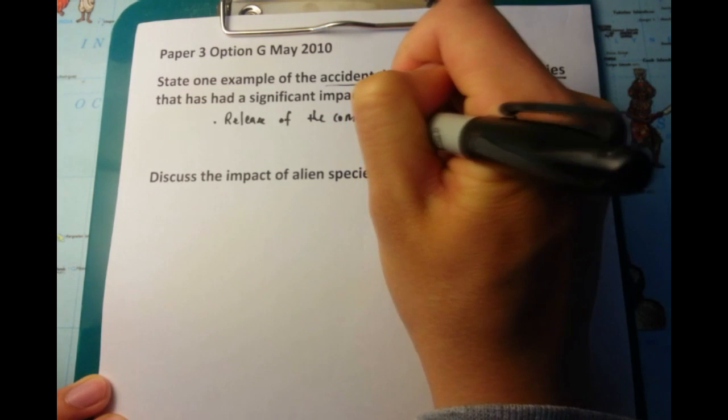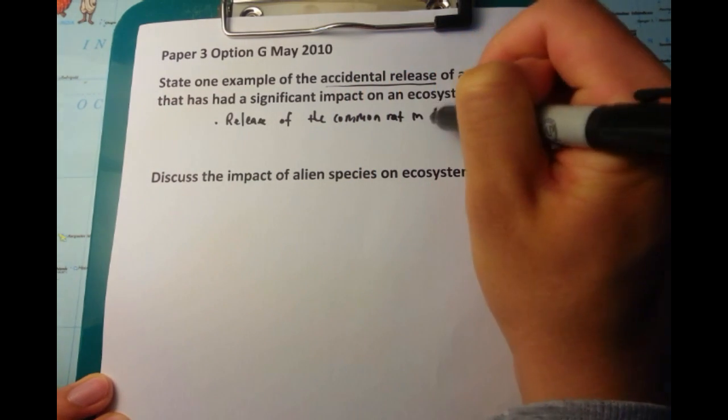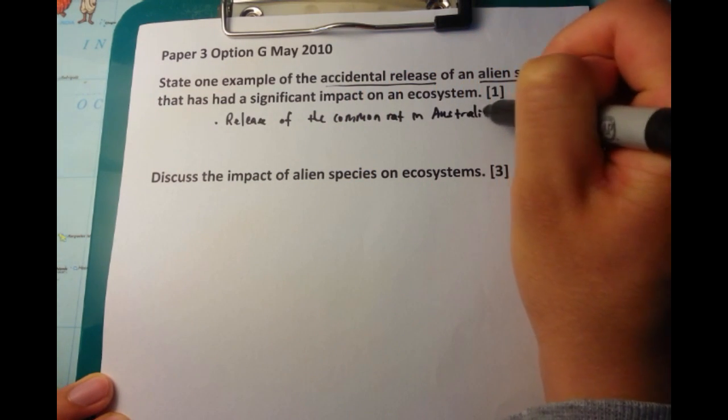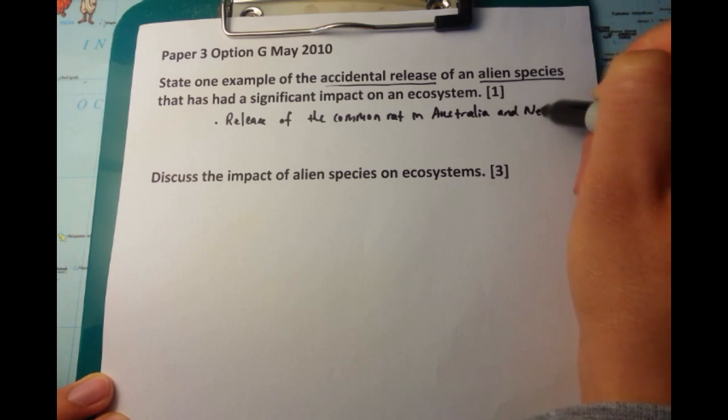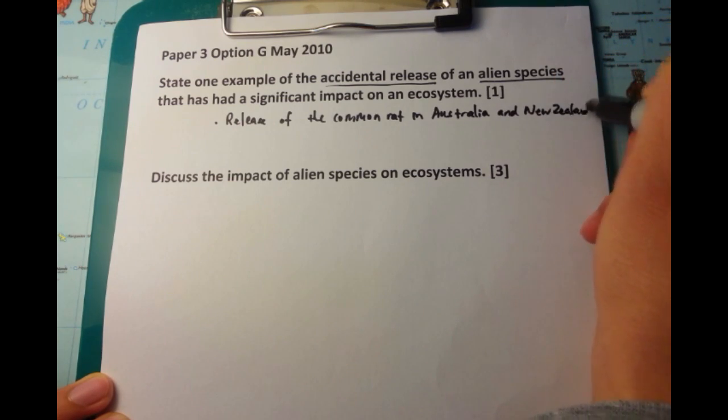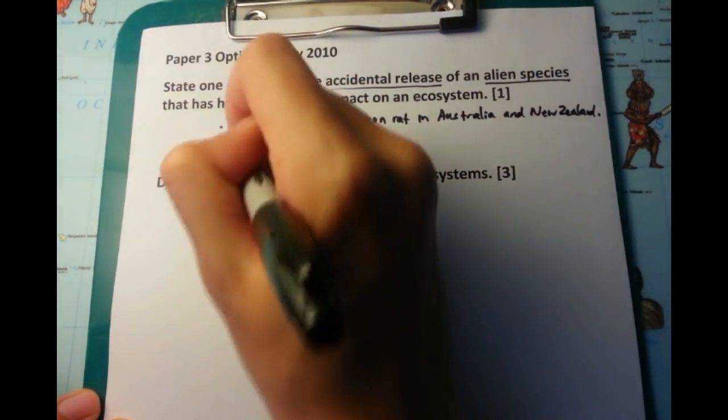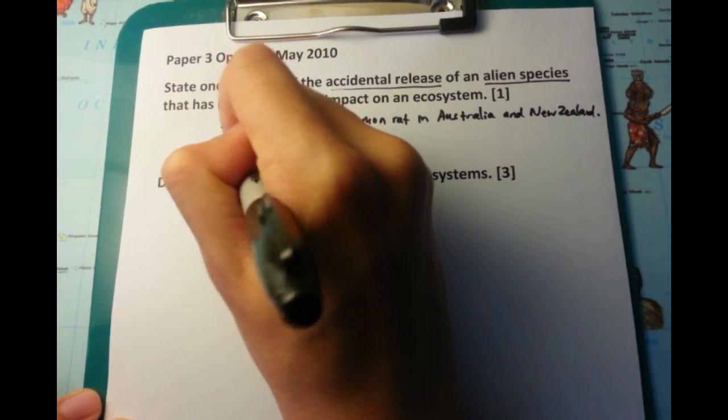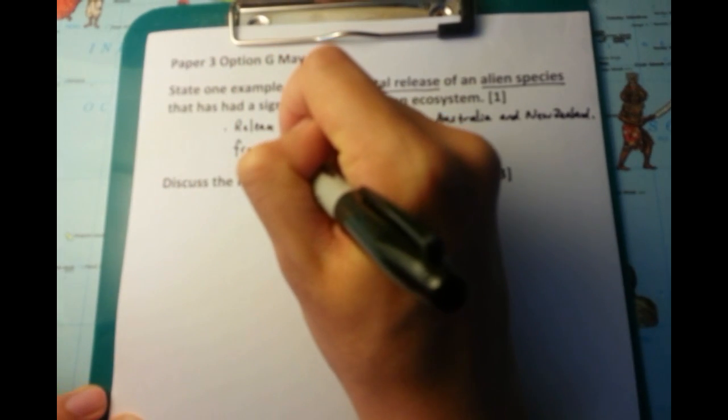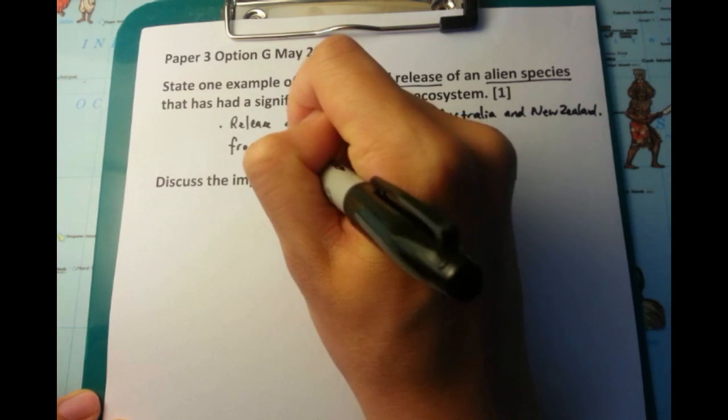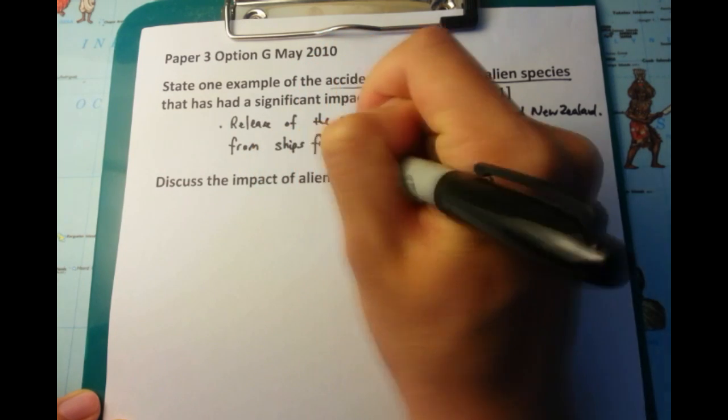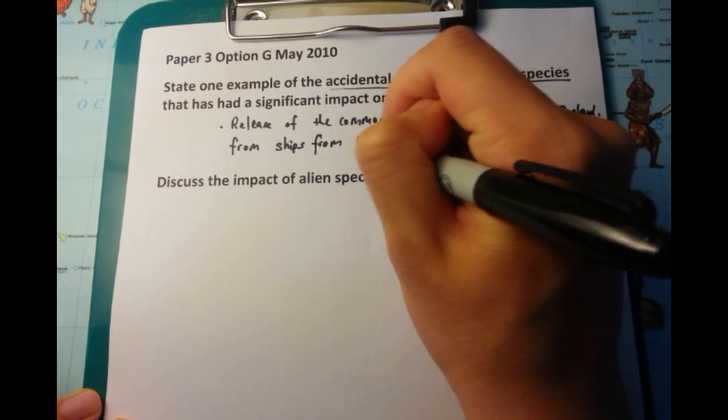Coming from Australia myself, I'm going to talk about the common rat, which was released into Australia, as well as New Zealand, around about the time of the settlement, I believe, the late 1700s. They came on ships and subsequently caused a lot of damage to the natural fauna of Australia.